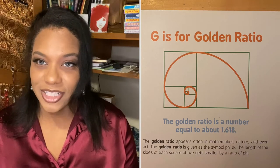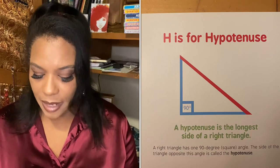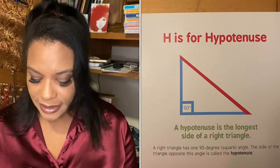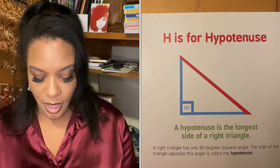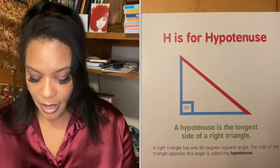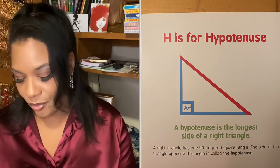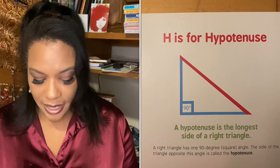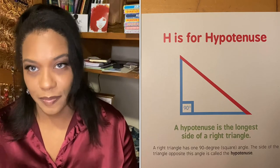H is for hypotenuse. A hypotenuse is the longest side of a right triangle. A right triangle has one 90 degree square angle. The side of the triangle opposite this angle is called the hypotenuse.